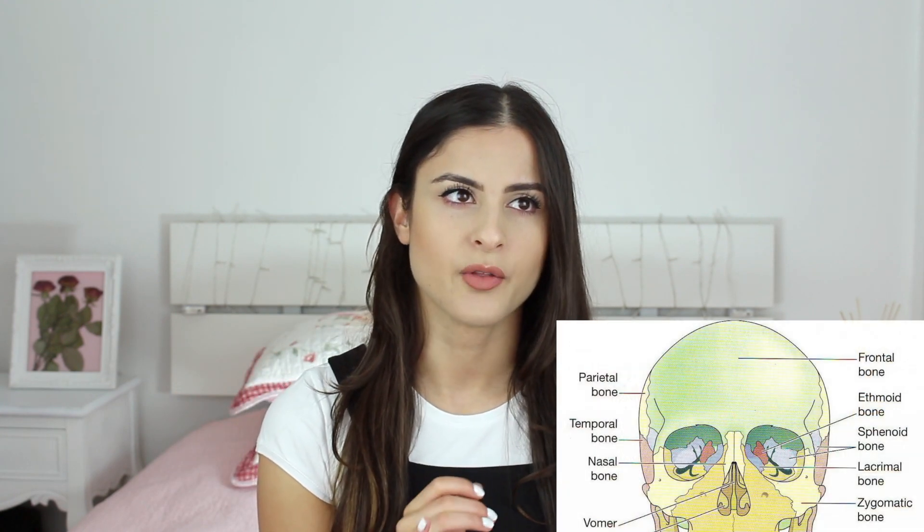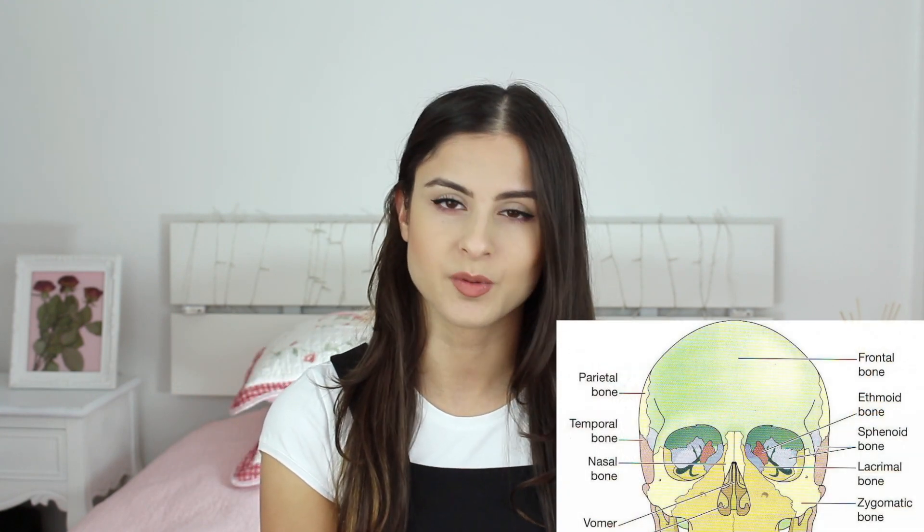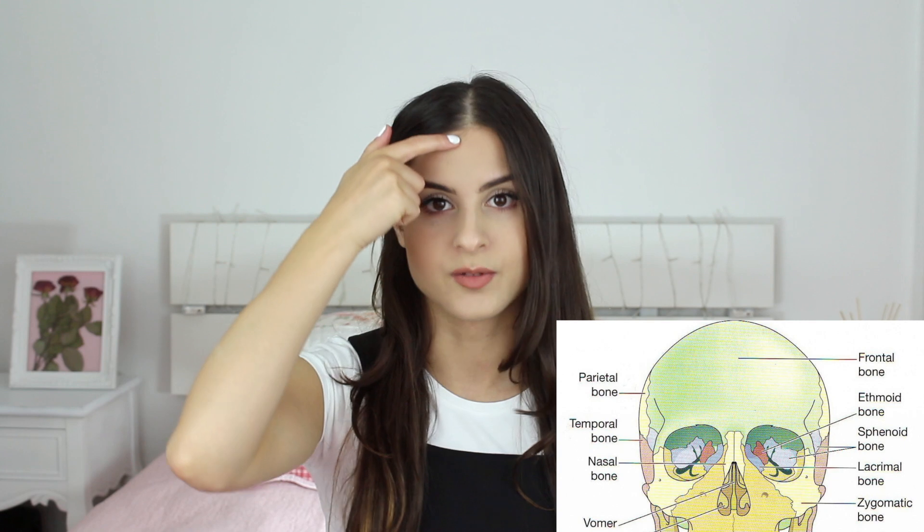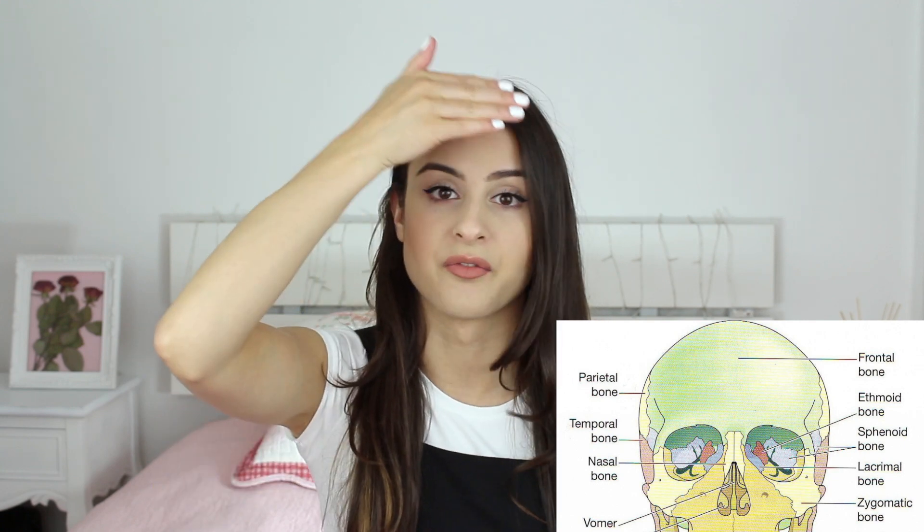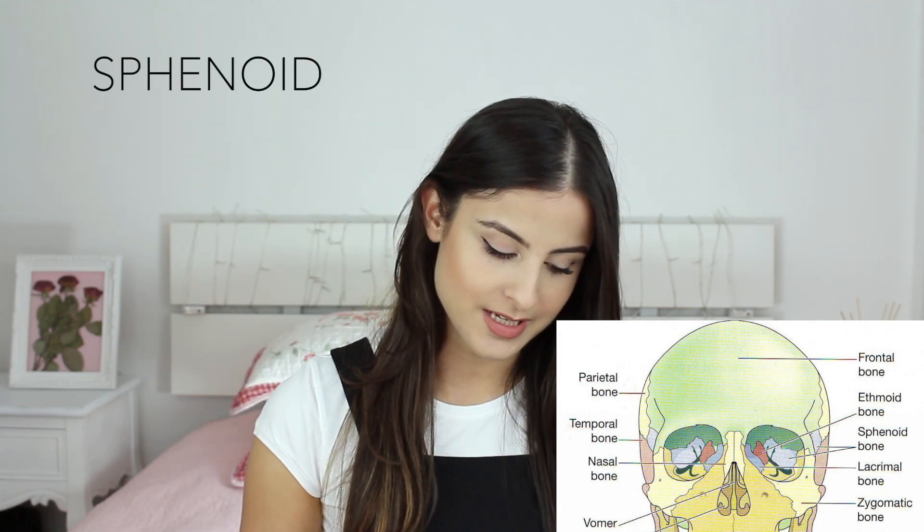If you learn the bones in a certain order it will help you remember them for your exam. The first one I learned was frontal — this bone here, your forehead. This one is easy to remember because the muscle is called frontalis and the bone is called frontal, and it's just at the front of your forehead.